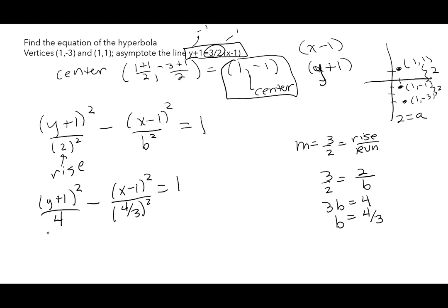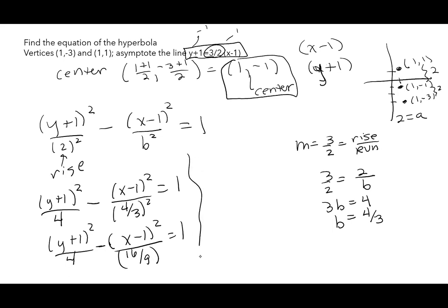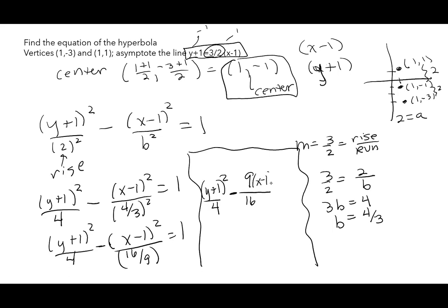So now I have (y+1)²/4 - (x-1)²/(4/3)² = 1, which is (y+1)²/4 - (x-1)²/(16/9) = 1. Dividing by a fraction means flipping it, so the final answer is (y+1)²/4 - 9(x-1)²/16 = 1.